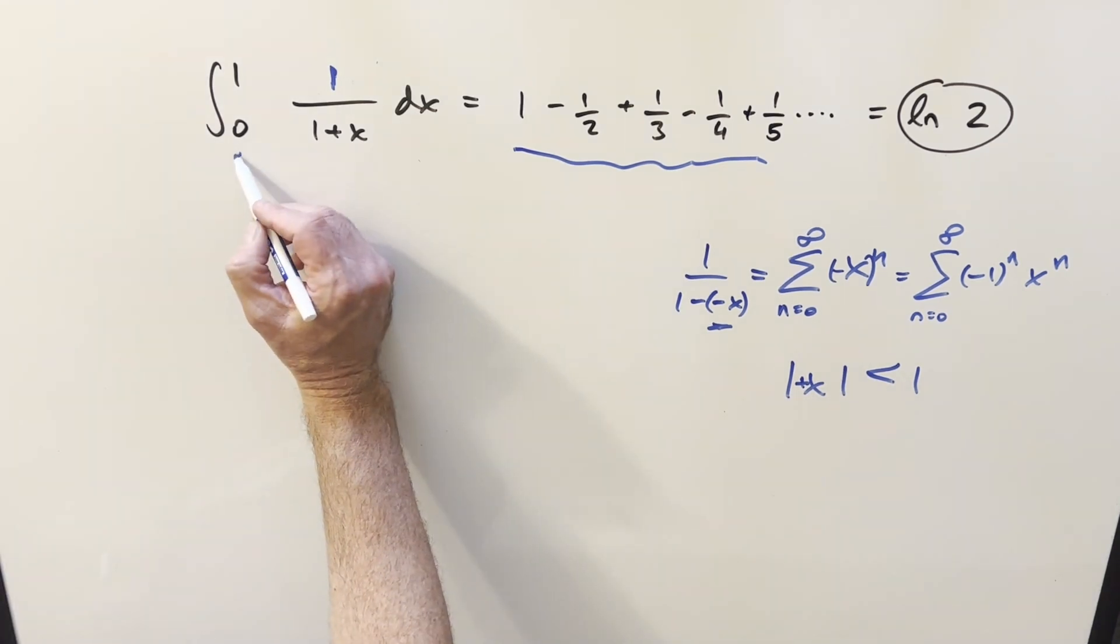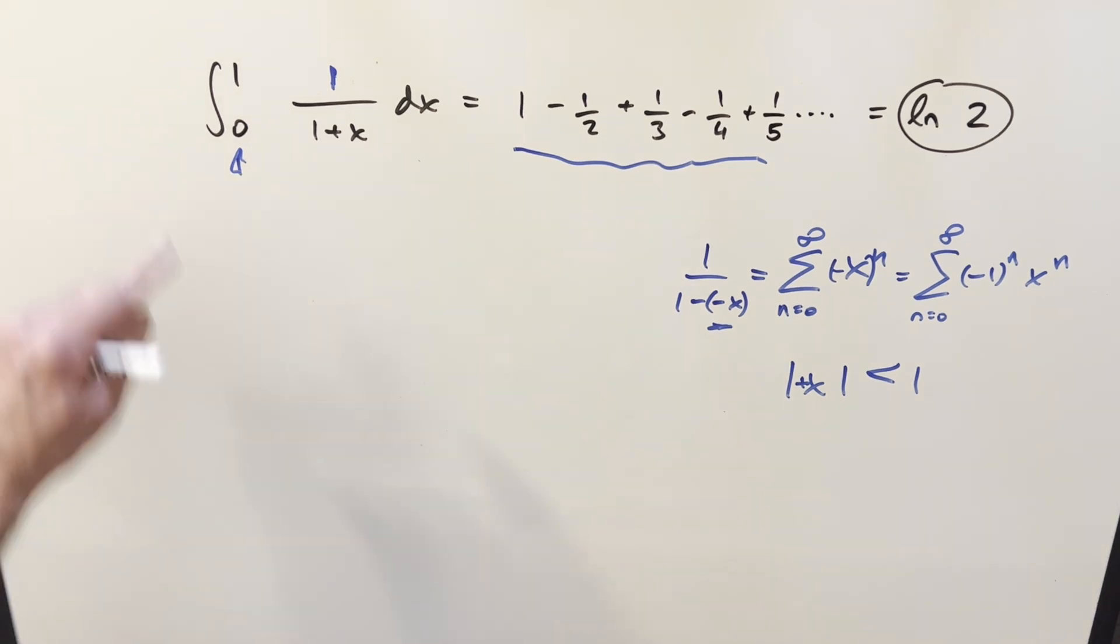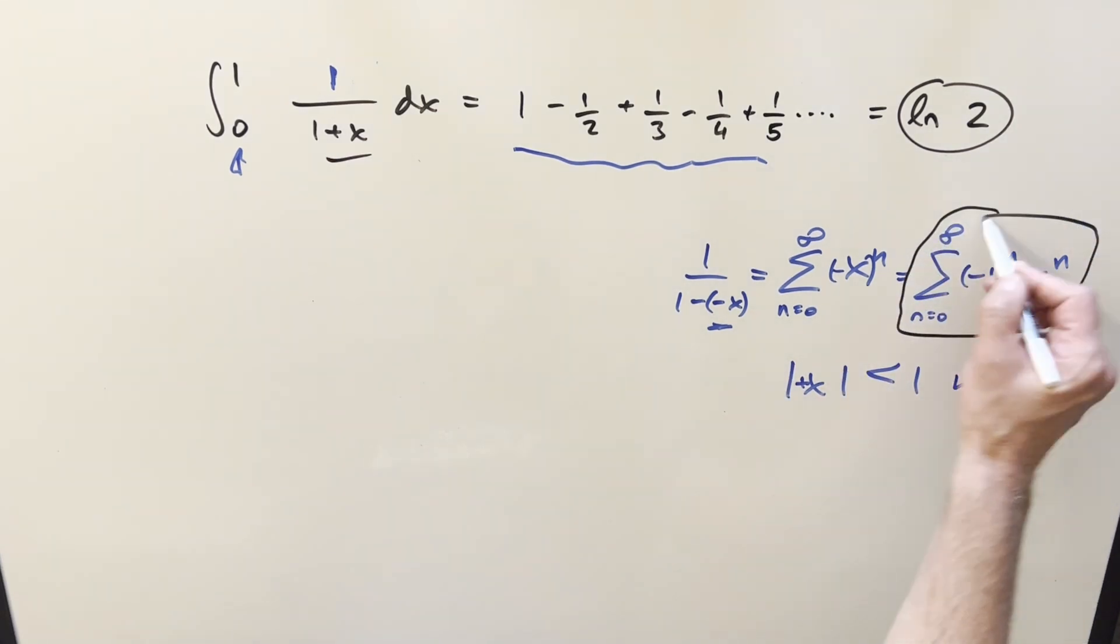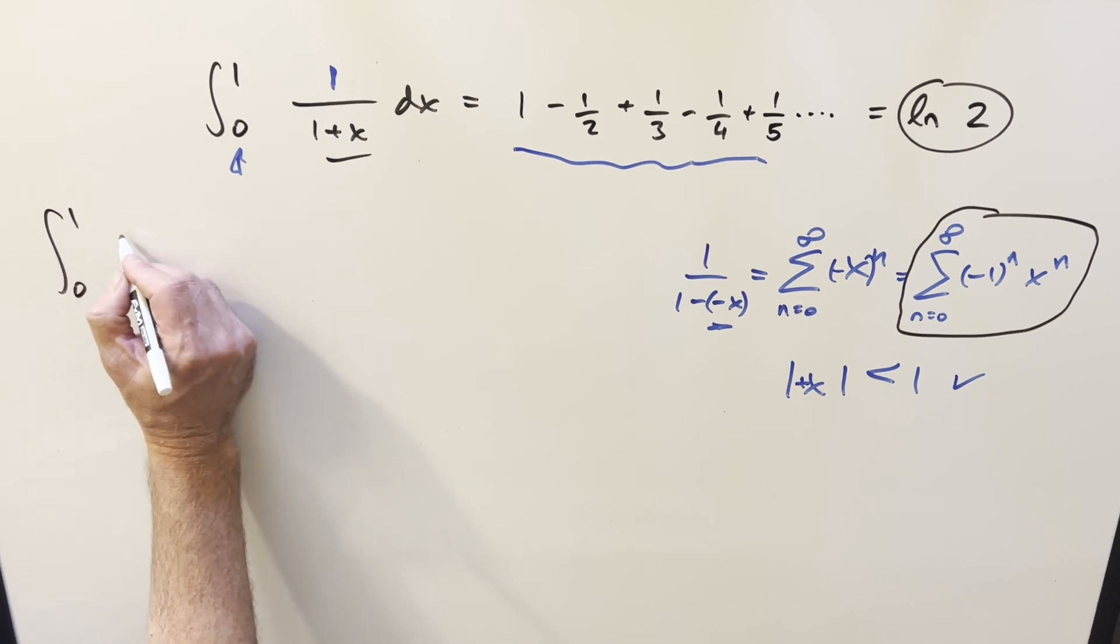That's no problem because of our bounds. Our bounds have our x values always between 0 and 1. So this piece is true. And what that allows me to do is take our whole integral and just substitute in this series.